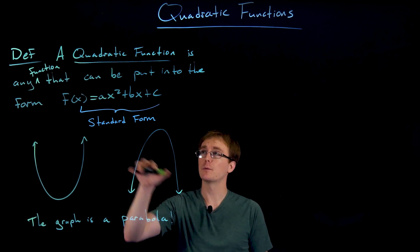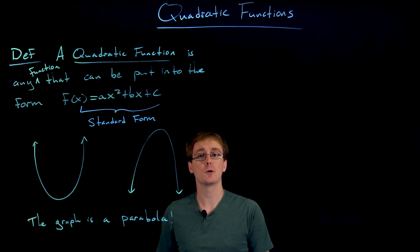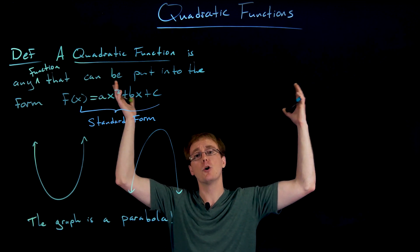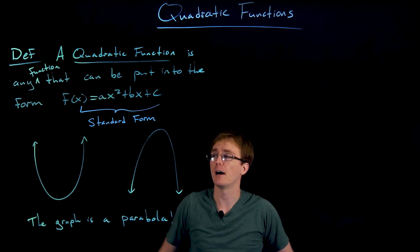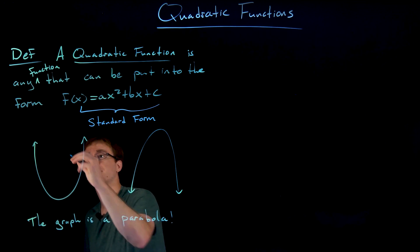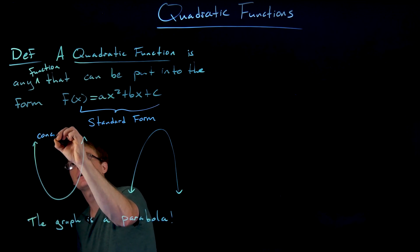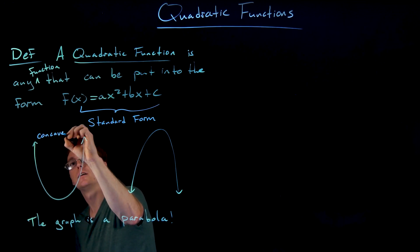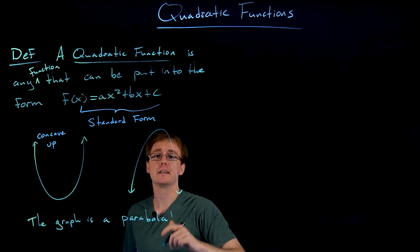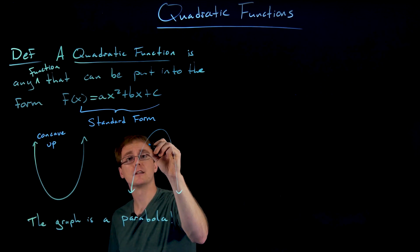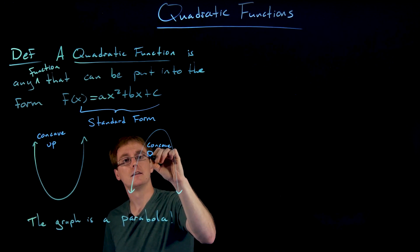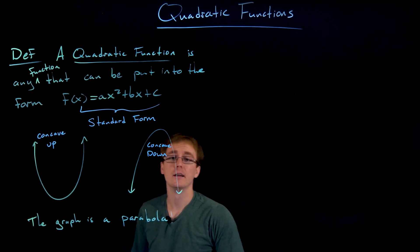When working with quadratic functions in standard form, our parabolas are always going to be either concave up — opening up — or concave down — opening down. This kind of smiley face shape is our concave up parabola, and our frowny face or bent-down curve is our concave down parabola.